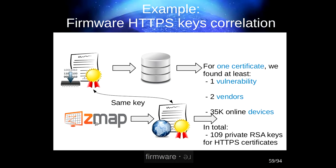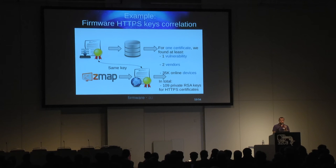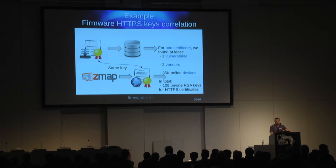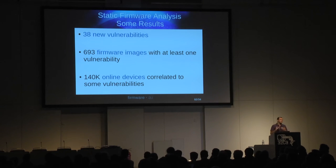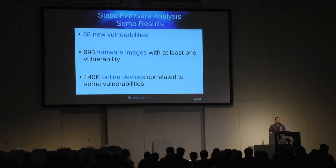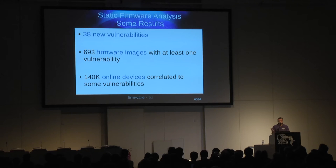In the Brickcom cameras case, we found one certificate and one important vulnerability, correlated to two vendors and a total of 35,000 online devices. Back in 2014, we had 109 private RSA keys without passphrase — you can scan the fingerprints on the internet using Shodan or Censys. As a first result from that simple non-code static analysis, we found 38 new vulnerabilities — XSS, backdoors, non-trivial default or hard-coded passwords — affecting around 700 firmware images, and correlated some vulnerabilities to around 140 online devices using Shodan and Google dorks.